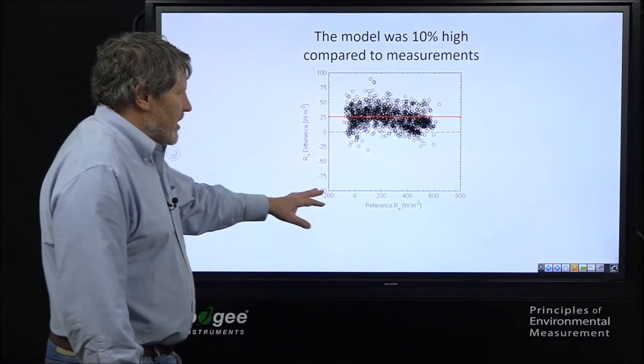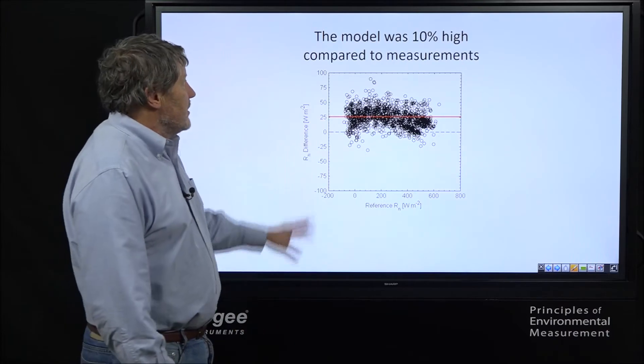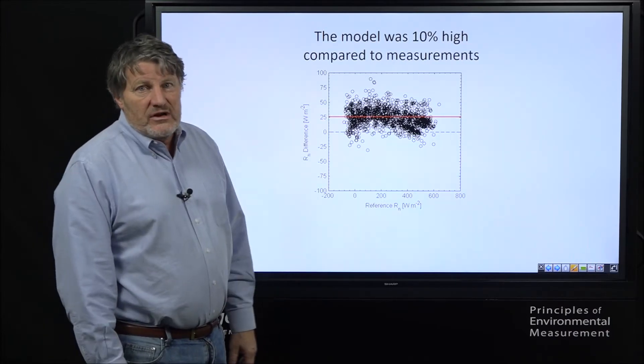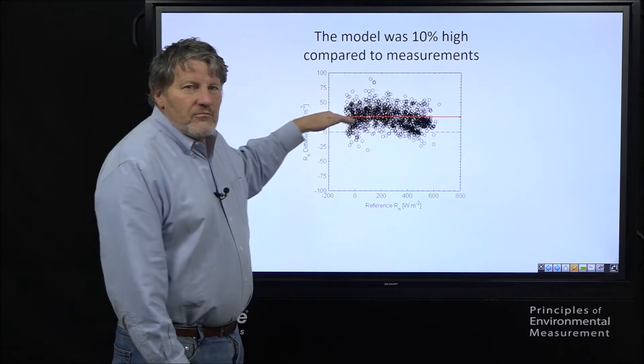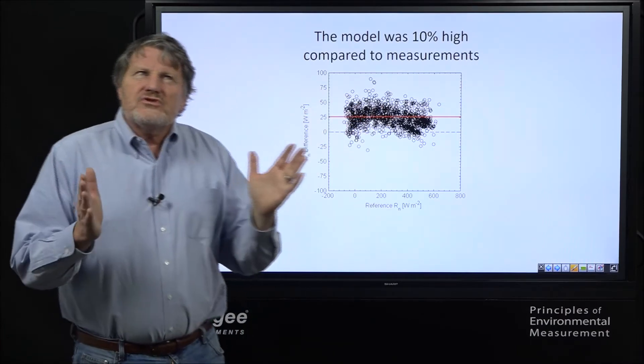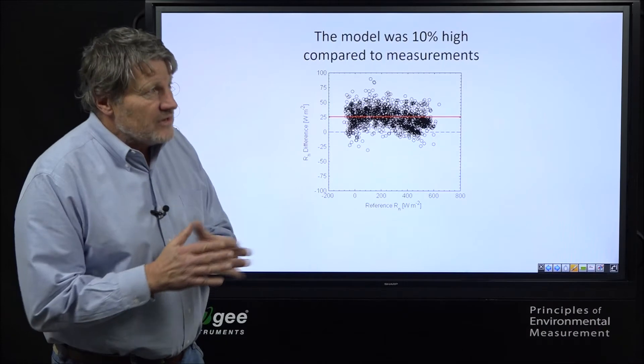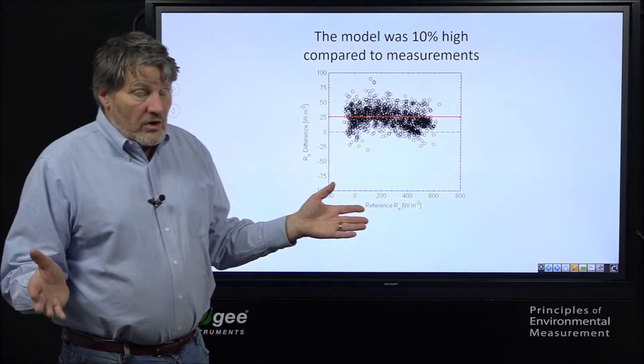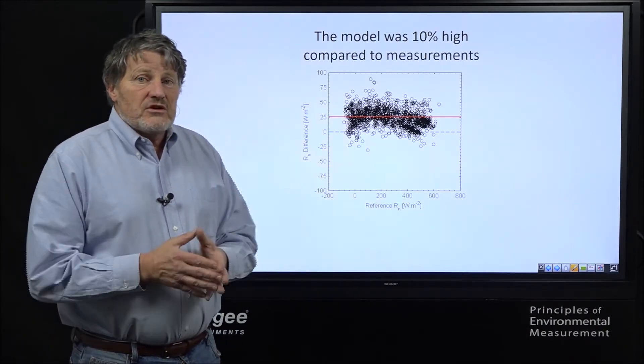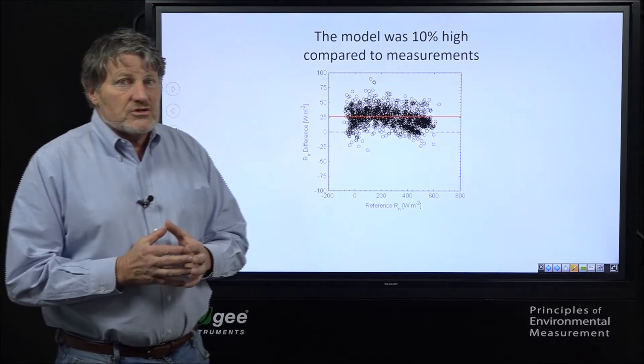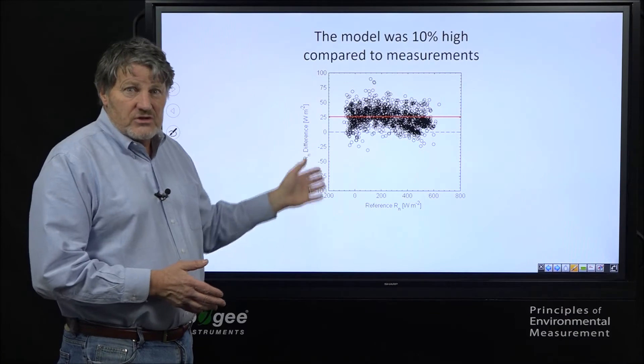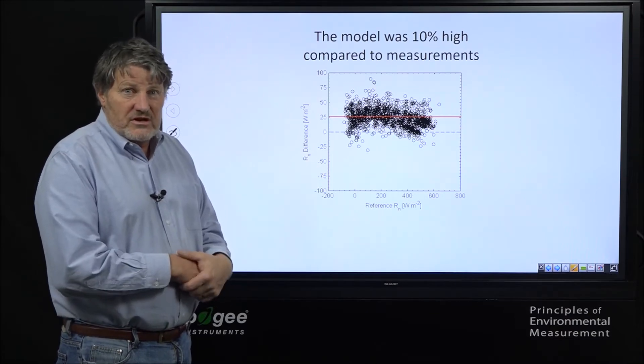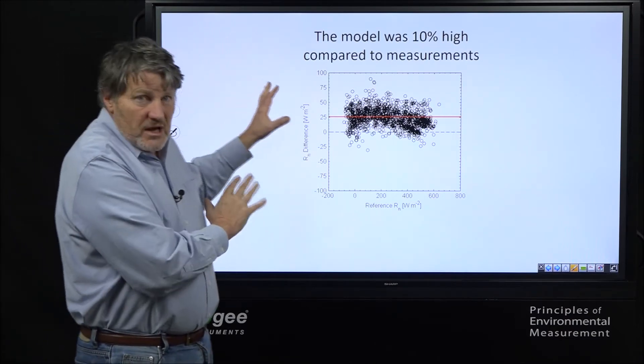And how far off were they? Here's a simple graph out of many that we did. The model was 10% high compared to measurements. Here's the measurements. So, 10% high means, you know, that's not that much. Are you going to overwater 10%? Waste 10% to the water? Water is a really precious resource. I consider a 10% error in this model to be pretty significant.